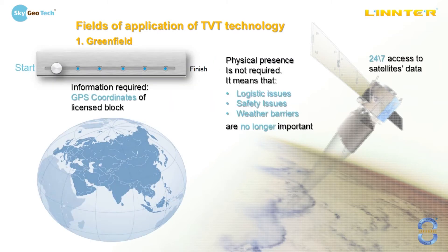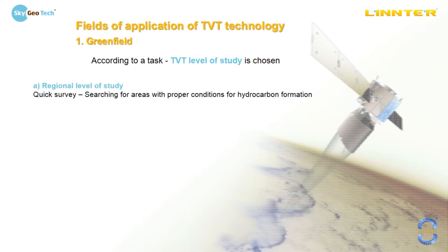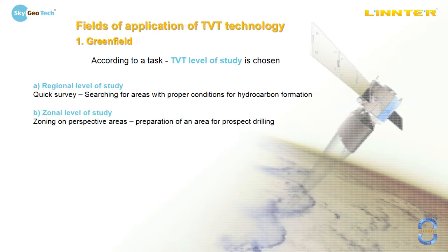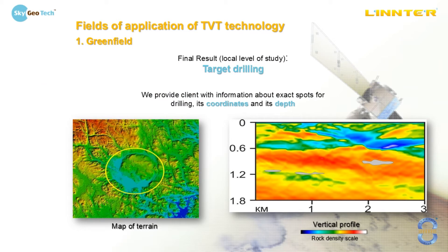According to the task, we choose the TVT level of study. It can be regional level for quick surveys, zonal level for preparation of an area for prospect drilling, and local level when we get detailed information about the block and the target drilling. In every level of study, TVT technology is efficient regardless of relief or terrain conditions. As a final result at local level of study, we get target drilling information — exact spots where to drill, coordinates on a map, and exact depths on a vertical profile.